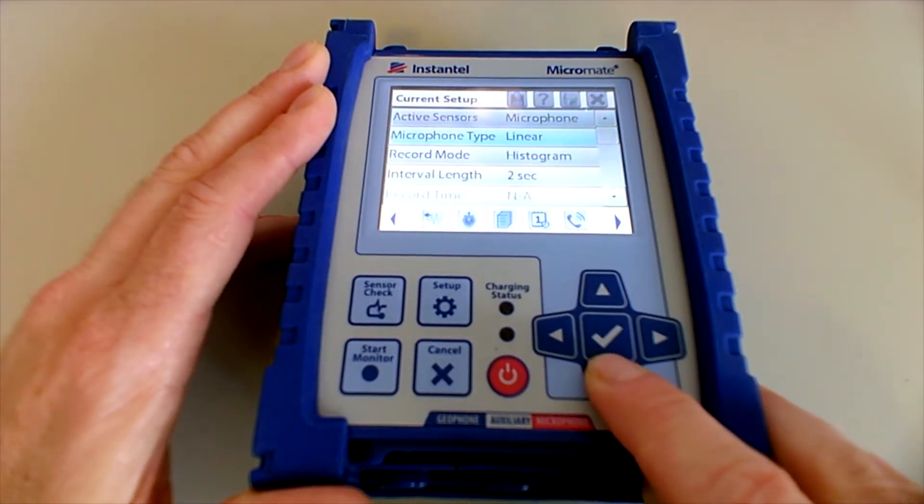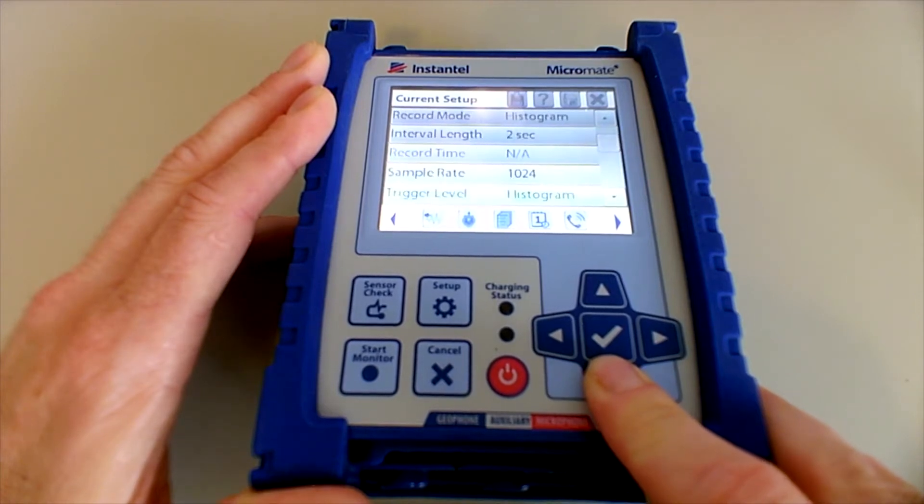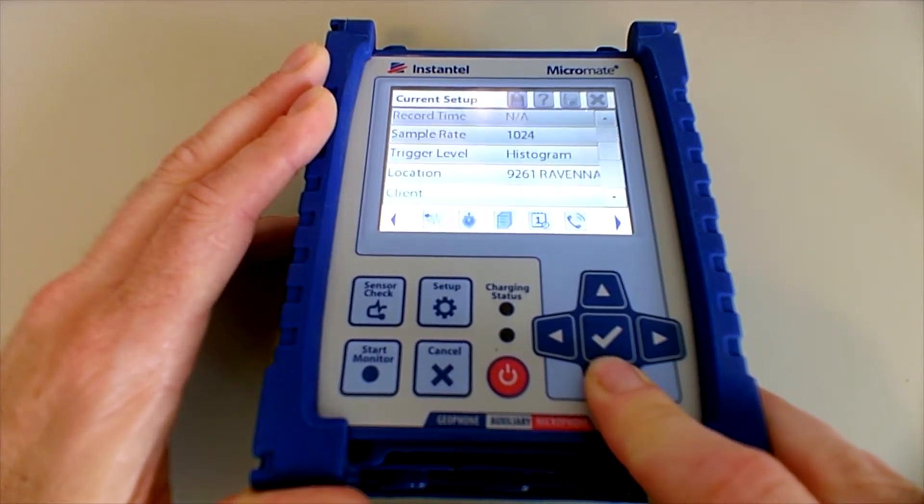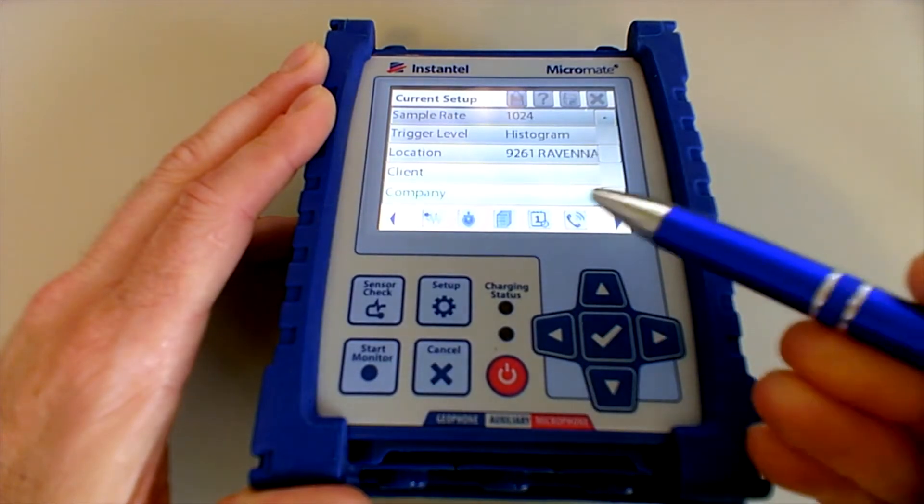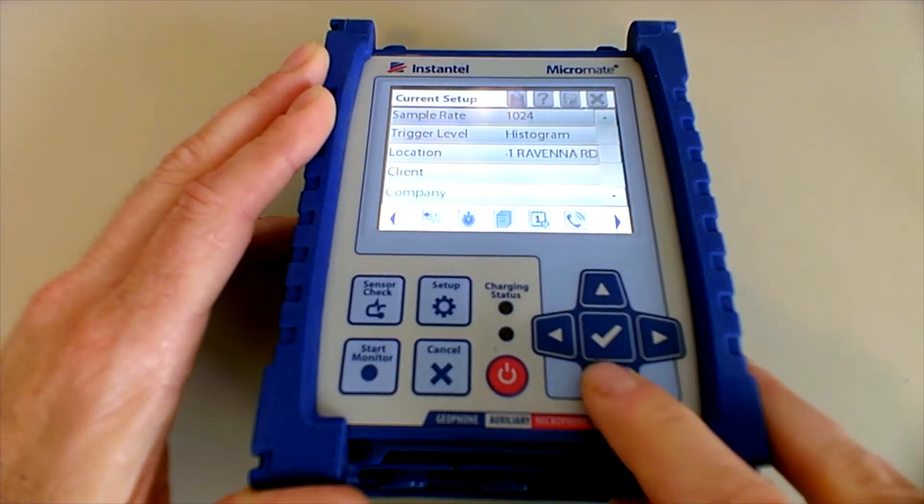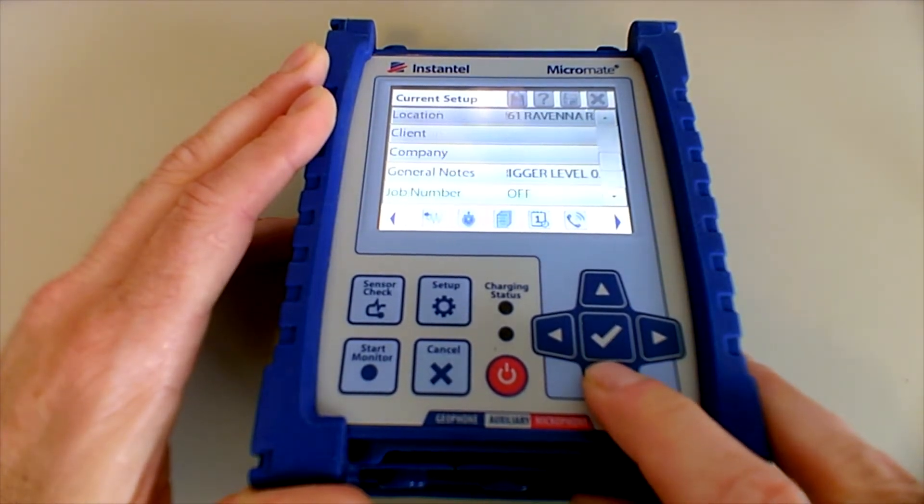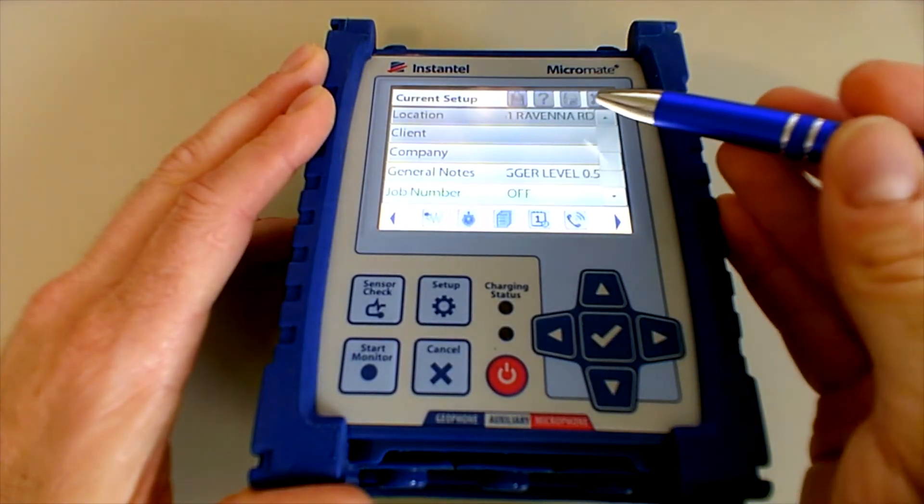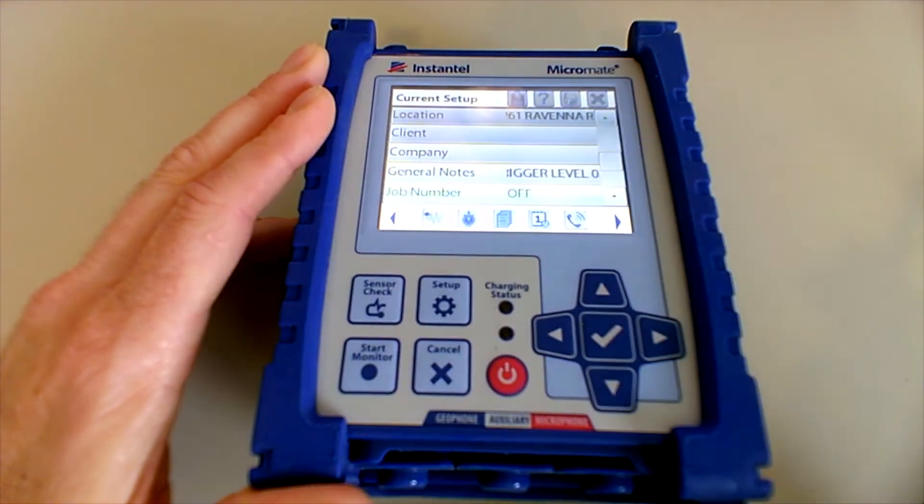Your active sensor, type of microphone, recording mode, interval length. You're going to scroll down until you get to the notes section which begins with location. So the notes options are location, client, company, and general notes.